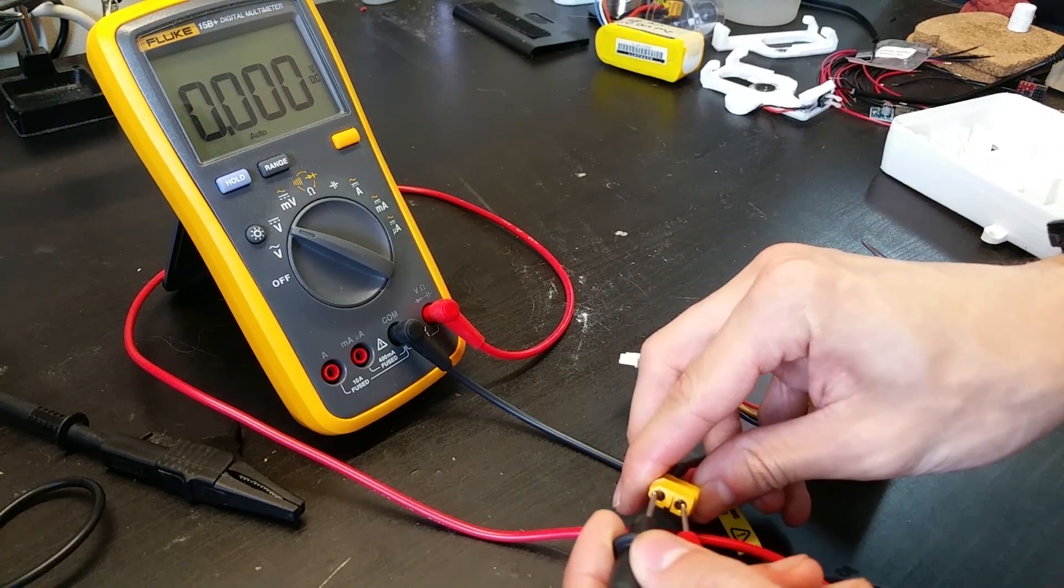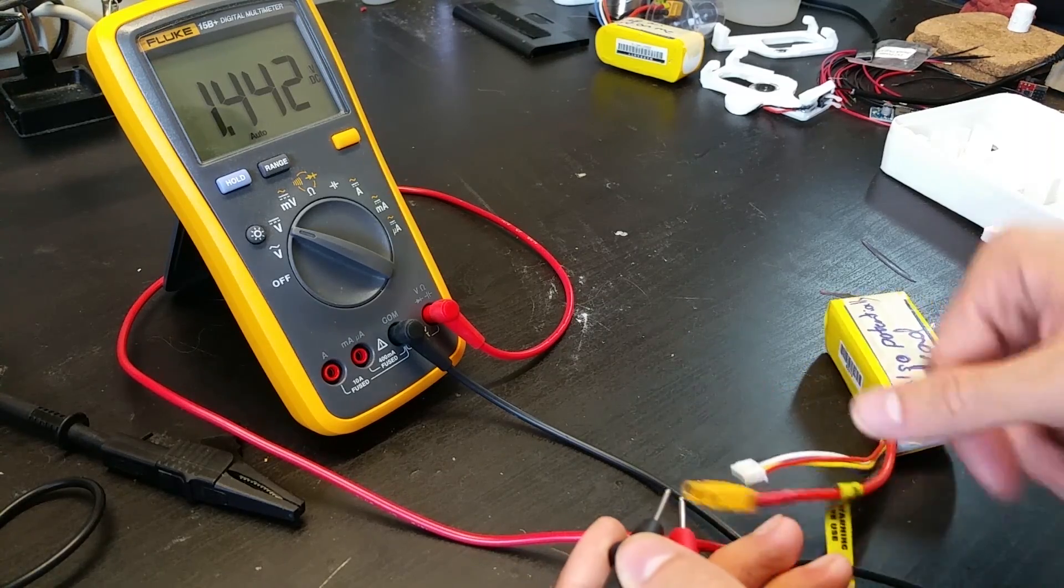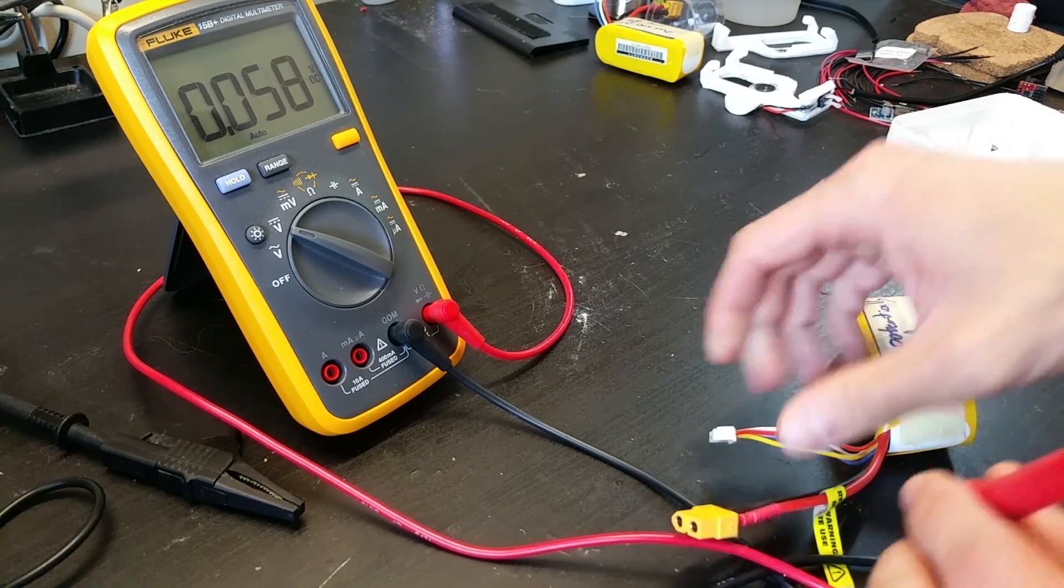Alright, so let's see how this battery's doing. Overall voltage is 14.4 volts, which is still a little bit low, but it's within our acceptable range for a 4S battery.